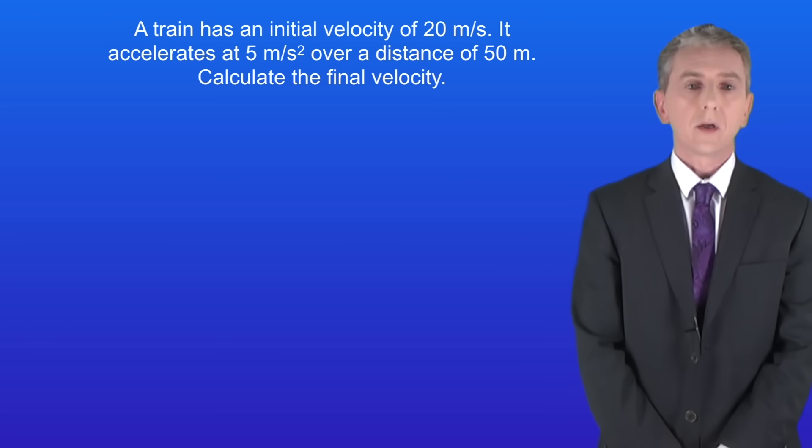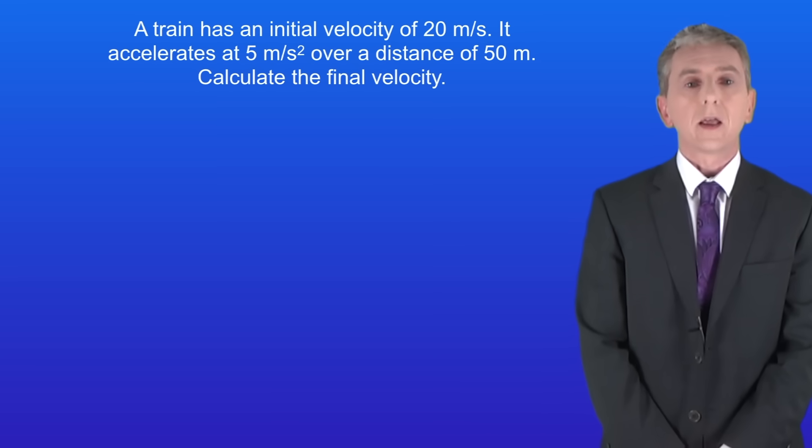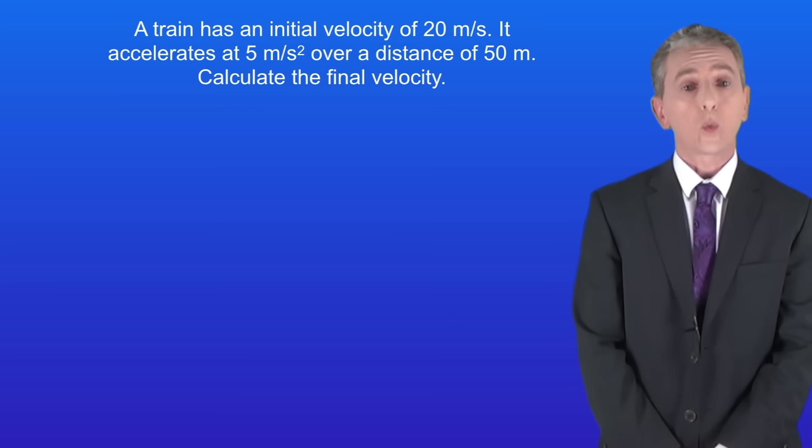Here's a final question for you. A train has an initial velocity of 20 metres per second. It accelerates at 5 metres per second squared over a distance of 50 metres. Calculate the final velocity. Now in this case I'd like you to rearrange the equation yourself. If you're a higher tier student then you should be able to do this. If you're a foundation tier student then don't worry because I'll be giving you the equation in a second.